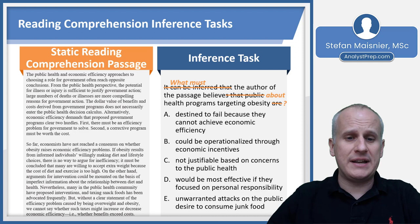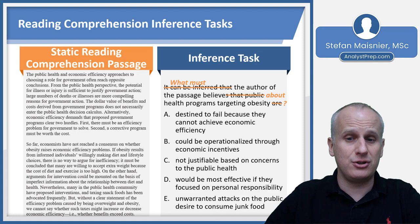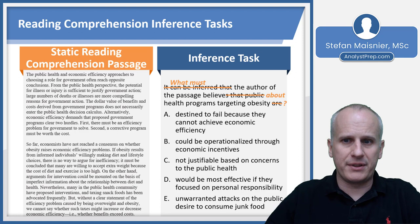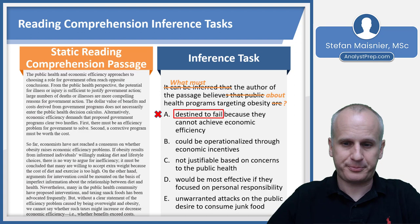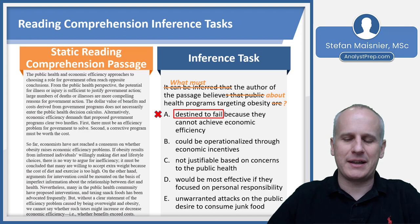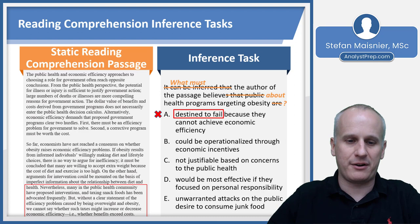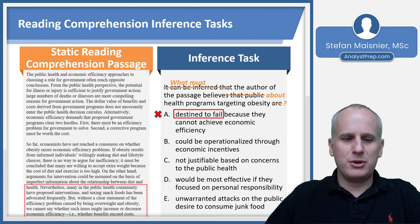The author basically agrees with the economists that there isn't a consensus on whether obesity raises economic efficiency problems — the author equivocates and says both sides could be true. So now with that as a prediction, we go to our answer choices. Choice A — 'destined to fail because they cannot achieve economic efficiency' — that 'destined to fail' is way too extreme, so we can eliminate choice A. Choice B — 'could be operationalized through economic incentives' — this is the bland language that we know the GMAT likes for correct answers.